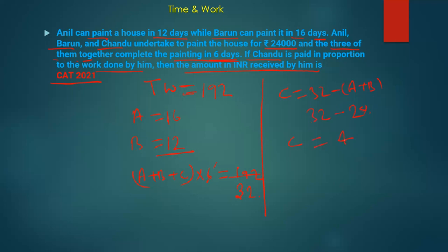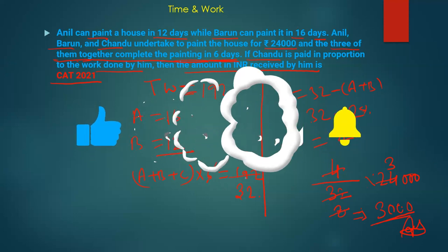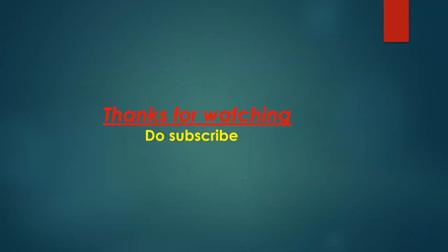All three worked together, so we use the efficiency ratio directly. Charu's share = 4 divided by 32 into 24,000 = 3,000. So Charu will get 3,000 as wages. I hope this is clear to you guys. If you liked the video, please like, subscribe, and share with your friends. Thank you for watching. Bye bye, take care and happy learning.